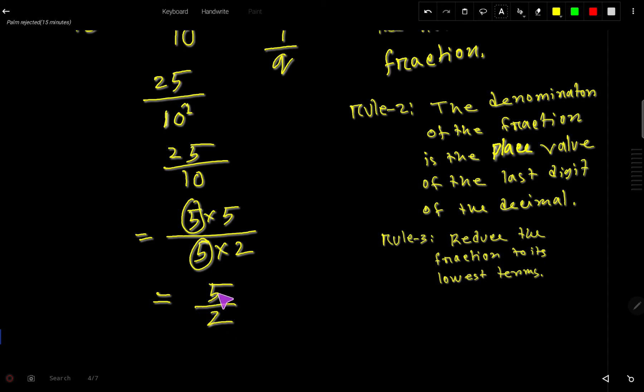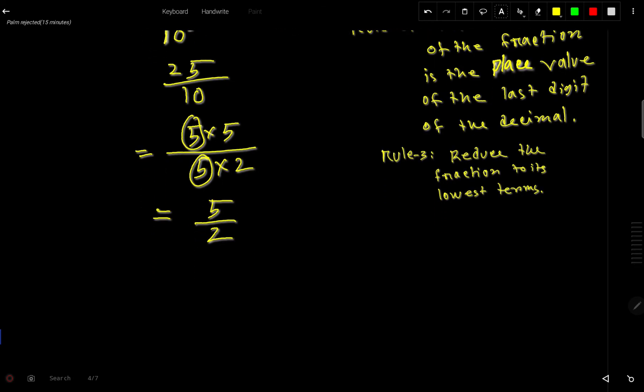This is an improper fraction. You can convert this improper fraction to mixed number. So how to do that. You have to divide the numerator by the denominator. 2 goes into 5 2 times. So 2 times 2 is 4. If you subtract then you will get 1. Quotient is the whole number and remainder is the numerator and divisor is the denominator. So 2 and half is the mixed number for this improper fraction. This is the answer in lowest form.